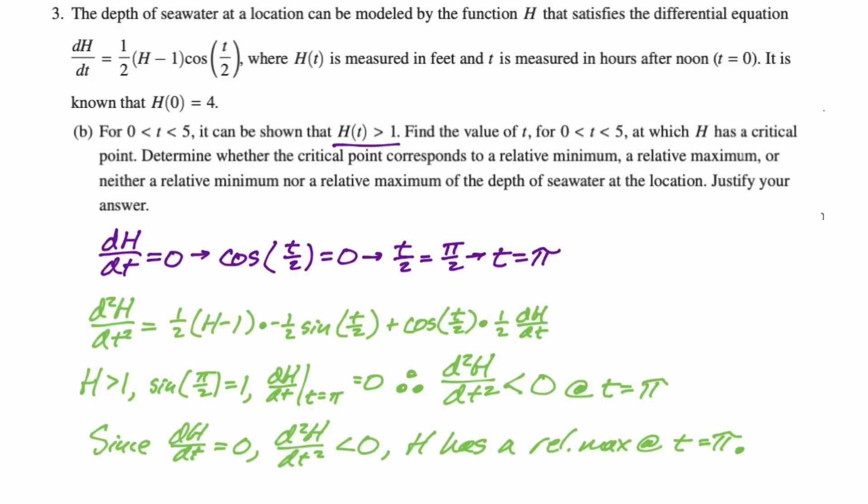By the second derivative test, we know that we are at a relative maximum. So let's write that up. Since dh/dt is equal to zero and the second derivative is less than zero, h has a relative maximum at t equals pi.